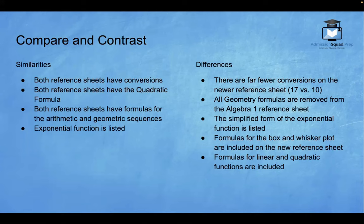But here are some differences to keep in mind as you prepare for the June 2024 Regents, which is when the new reference sheet is going to take effect. There are far fewer conversions on the newer reference sheet. There were 17 on the old version and only 10 on the new version. All geometry formulas are removed from the Algebra 1 reference sheet. It looks like they're going to be separating all reference sheets so that each exam has its own, which makes way more sense to me. The simplified form of the exponential function is listed. That's the one where we have y equals a times b to the x. That is way more simple for students to understand. So I really love that they made that adjustment.